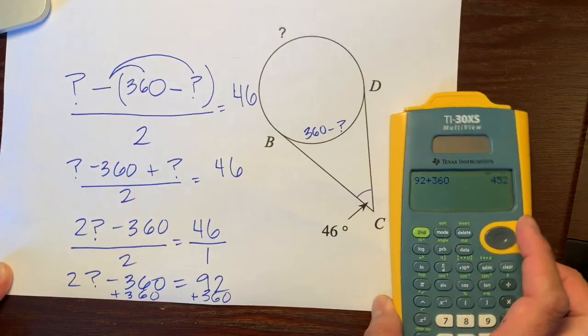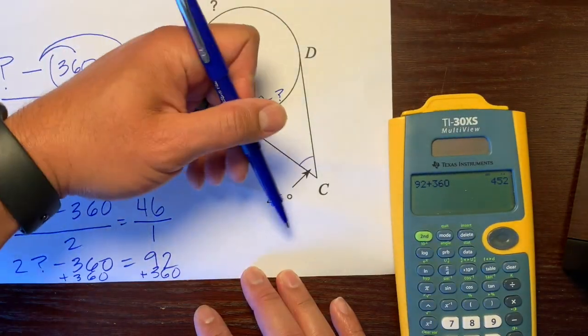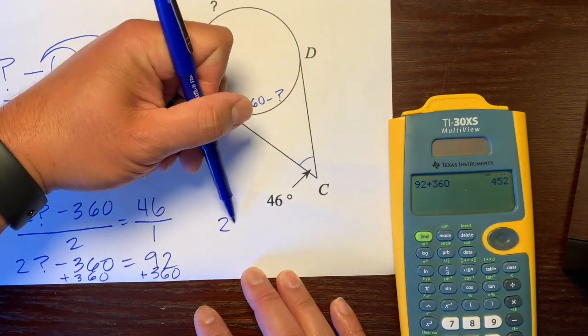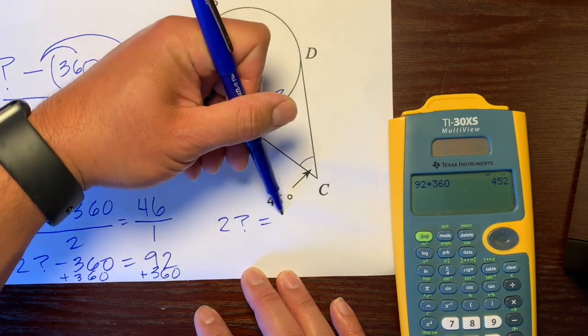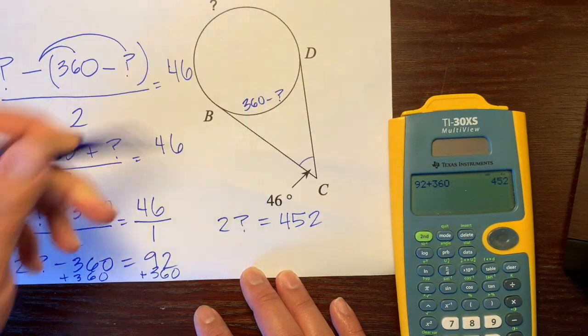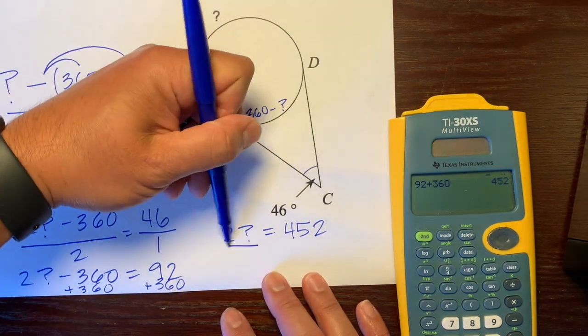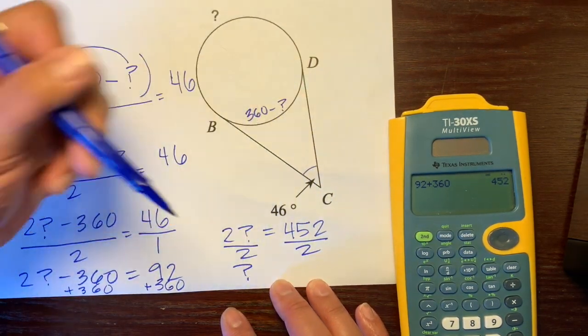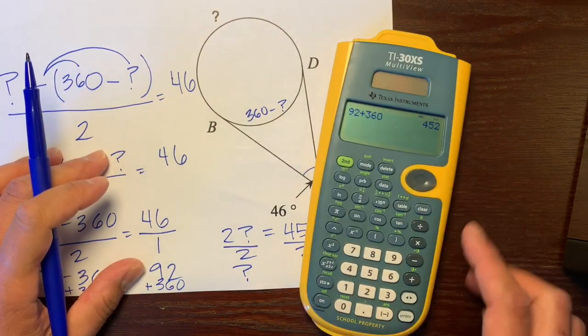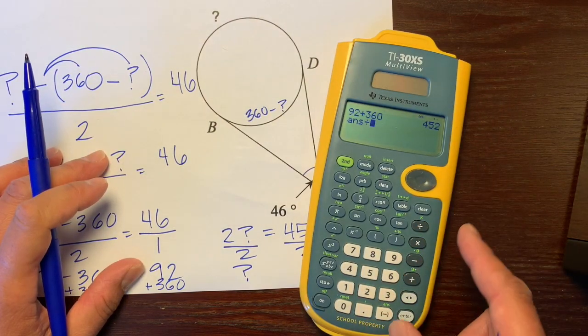So we have 2 times question mark equals 452. This is 2 times, opposite of multiplication is division. So the question mark is what's half of 452, which is 226 degrees.